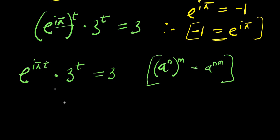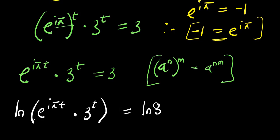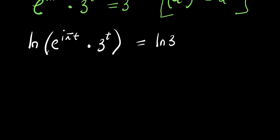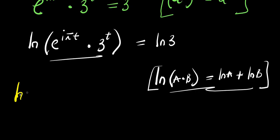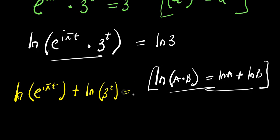Now at this point we can make use of natural log. So we take the natural log of e^(i·π·t) times 3^t, and this equals natural log of 3. Now we apply the log property: natural log of (a × b) equals natural log of a plus natural log of b. So we have natural log of e^(i·π·t) plus natural log of 3^t equals natural log of 3.